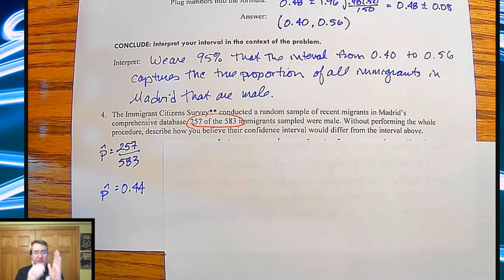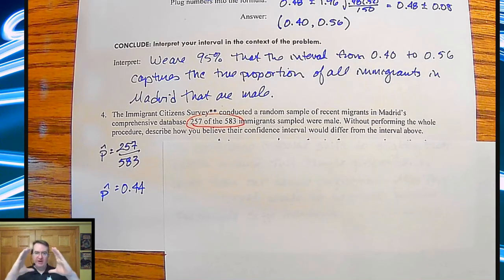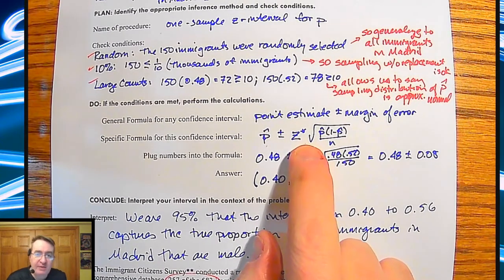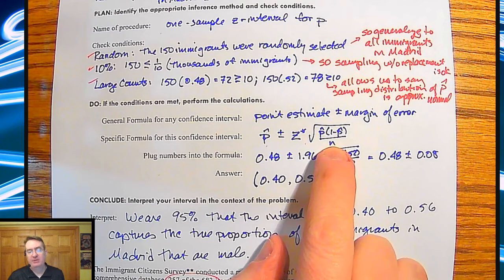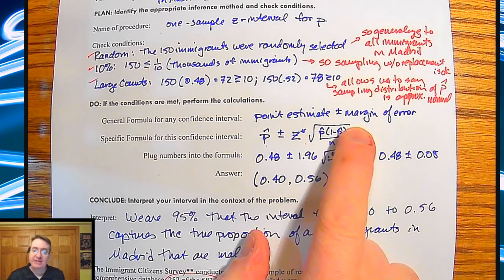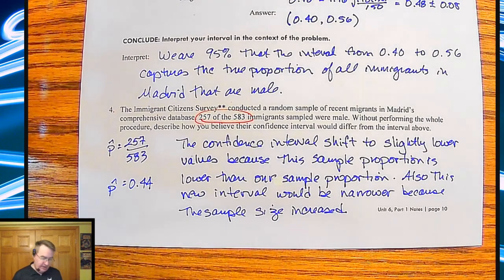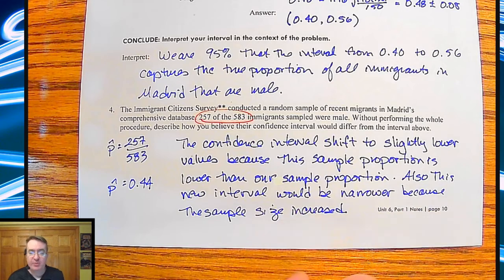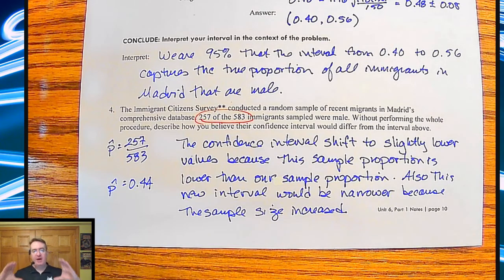So because the percentage gets smaller, the percentage is shifting from, again, the point estimate, shifting from 48 down to 44, that's going to shift the confidence interval a little bit there. The other thing to think about, remember, is what does sample size affect in our formula up here, which is another reason why writing this down isn't bad. Sample size goes up. That means I'm dividing by a larger number. If I'm dividing by a larger number, that means that this answer is going to become smaller. And so those are the two things that are going to end up happening. The confidence interval is going to shift to a slightly lower value because the sample proportion is lower than our sample proportion. And because the sample size has a larger number of items in the sample, the confidence interval is going to get smaller because obviously the standard deviation is going to get smaller.